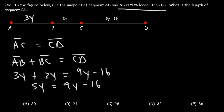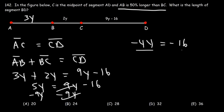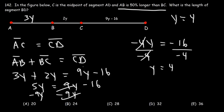Setting 5y equal to 9y minus 16, we subtract 9y from both sides: 5y minus 9y equals negative 4y, and that equals negative 16. Dividing both sides by negative 4, negative 16 divided by negative 4 gives y equals 4.